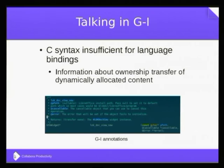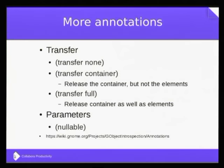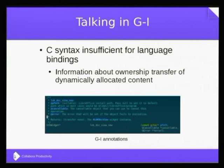In the case of 'nullable', it means you can set that parameter as null — you don't have to pass something always. One important thing to be careful about: the annotation information is embedded into the comments. If you change the comment, it will change the GIR introspection format that is generated, and you can expect the API to break. So you need to be very consistent with the comments, unlike in LibreOffice Core where changing a comment won't break the API. The GIR scanner reads these comments.